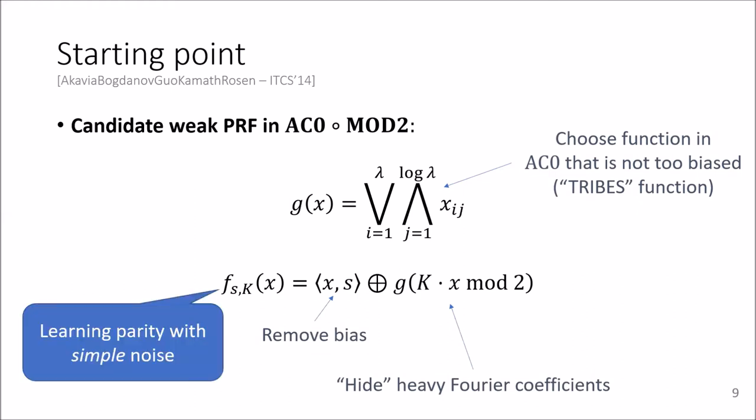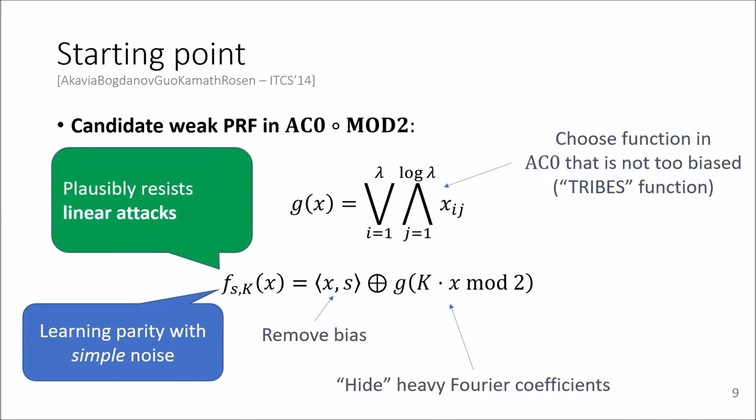This way of achieving a weak PRF can also be viewed as learning parity with simple deterministic noise, where here the noise function is determined by the function, the public function G and the secret key K.